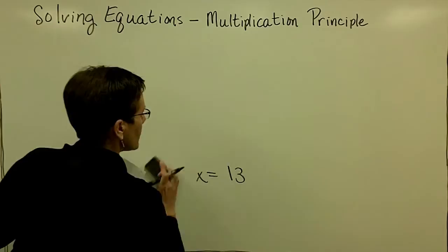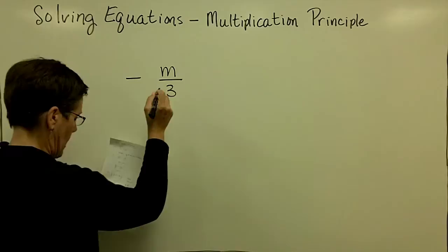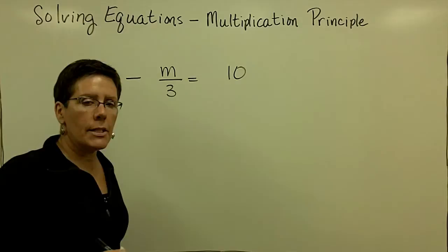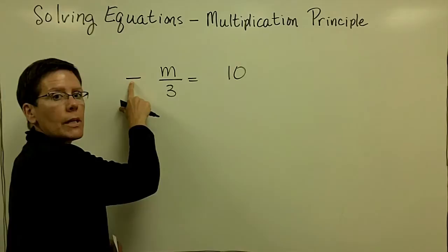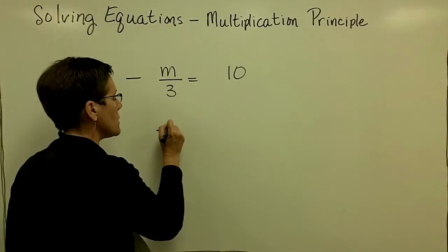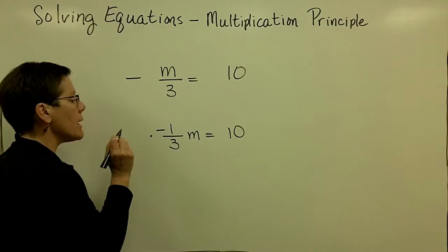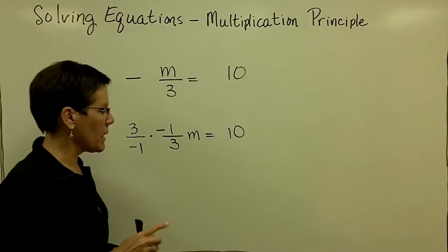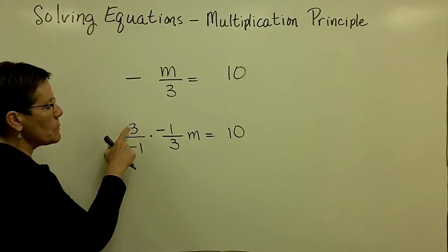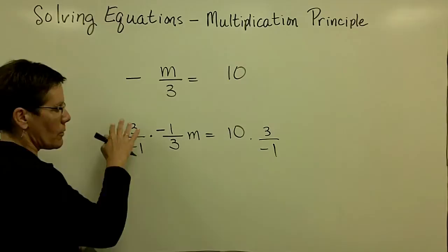I'm not going to take the time to check that one. Let's look at one that involves a negative sign again: negative m over 3 equals 10. I'd like you to recognize there is a coefficient of 1 with a negative 1 in front of that variable m. So I'm going to write that as negative 1 third times m equals 10, and I'm going to multiply by the reciprocal of this fraction. The reciprocal gives me positive 3 over negative 1, and a negative number times a negative number will be a positive. I am multiplying by negative 3 here.